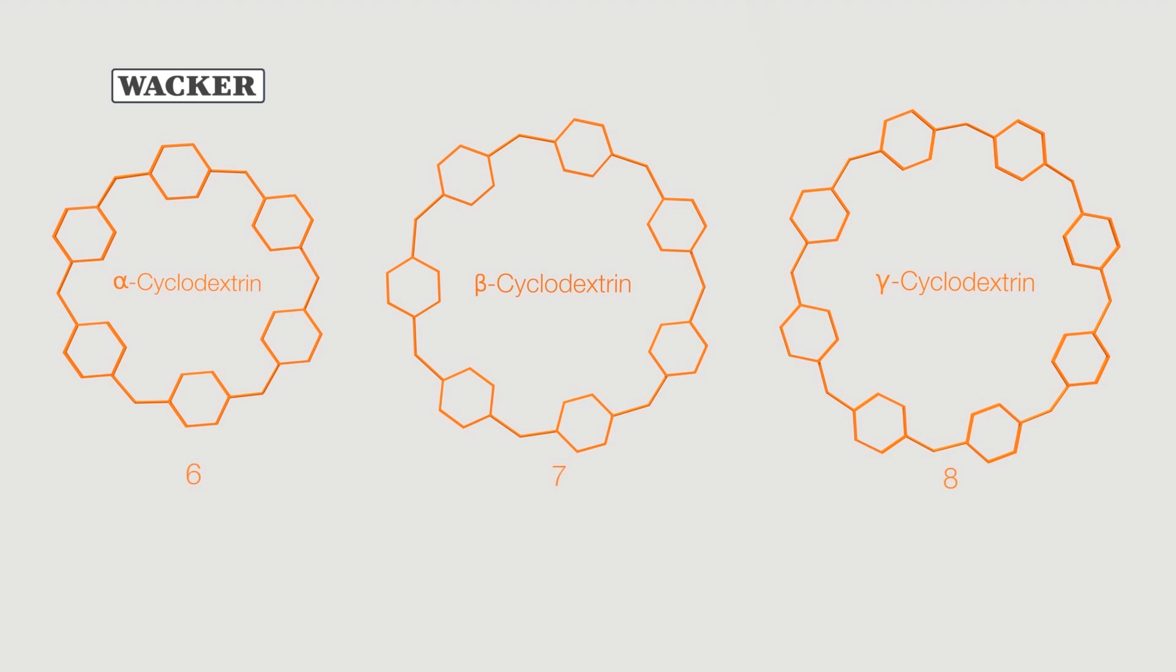The more glucose units are bound together, the greater the diameter. The three variants are produced by Wacker in a biotech biotransformation process.